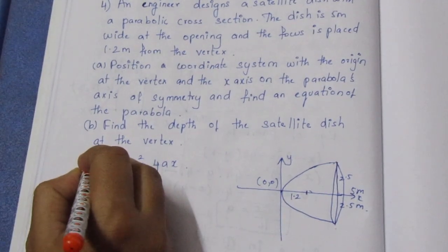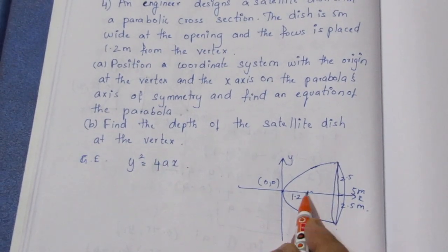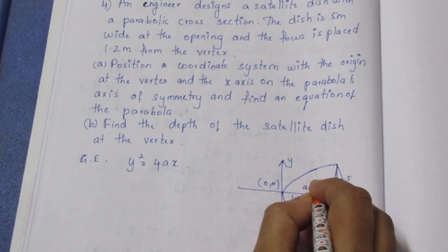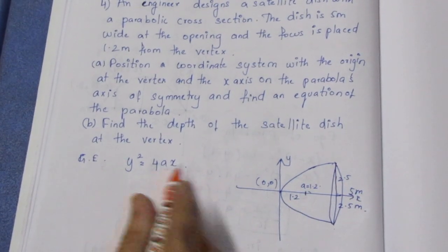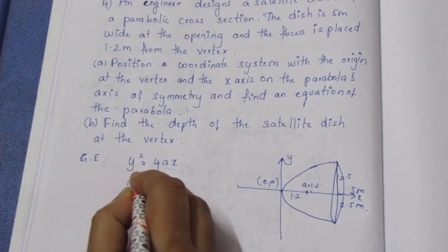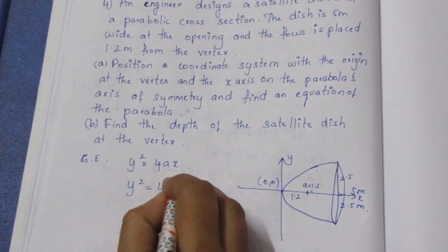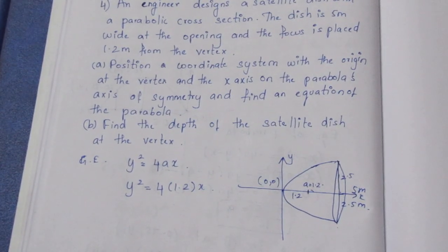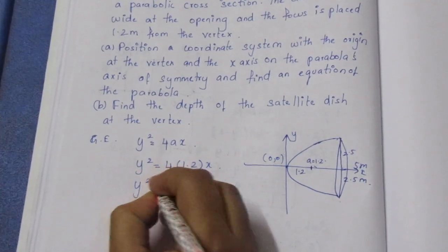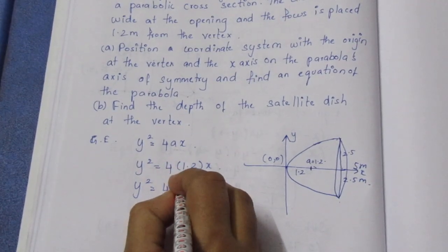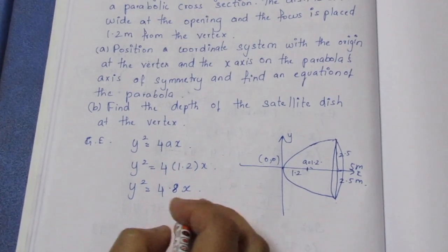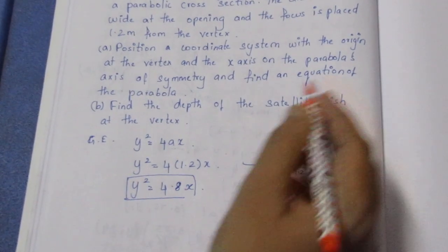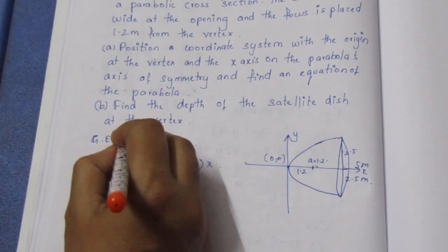This is the general equation. So a is 1.2 meter. If you look at the equation, this is a which is 1.2. So y² = 4(1.2)x = 4.8x. This is the equation of the parabola. We finish part a.